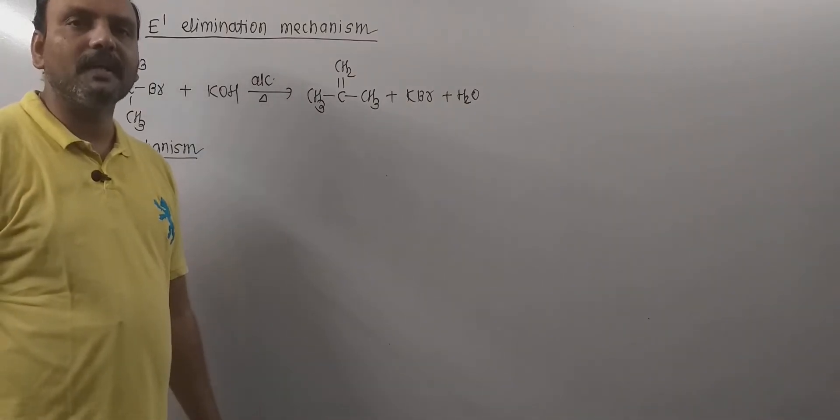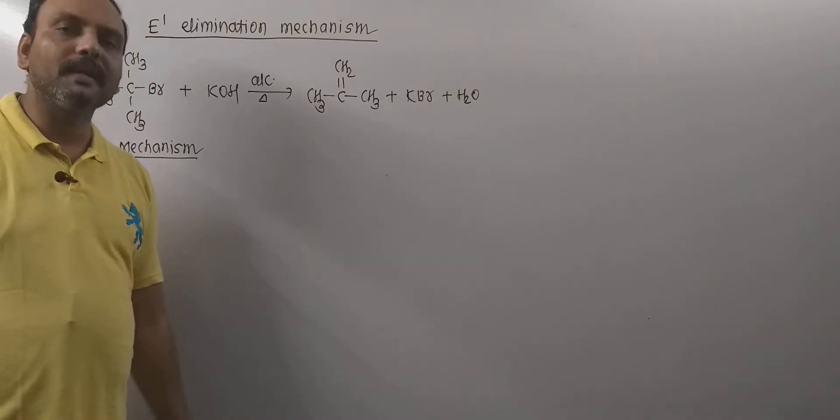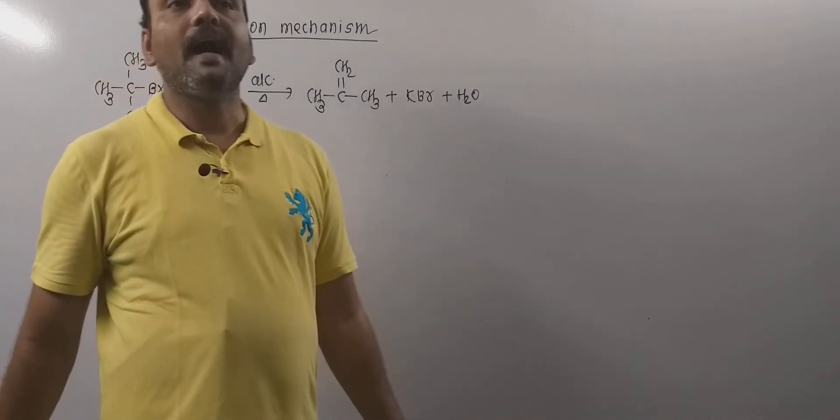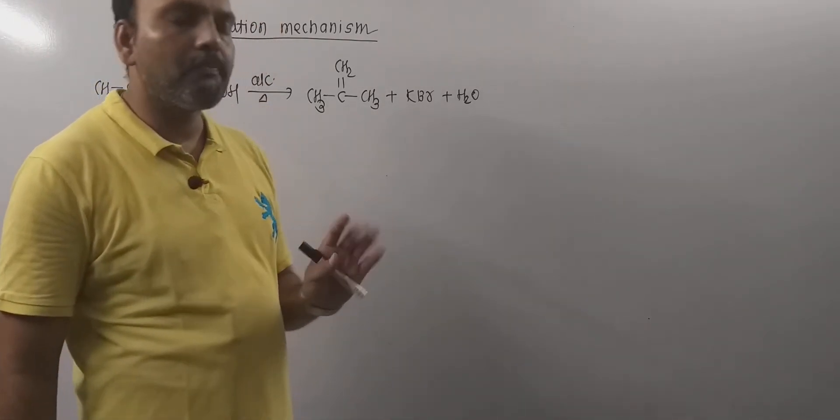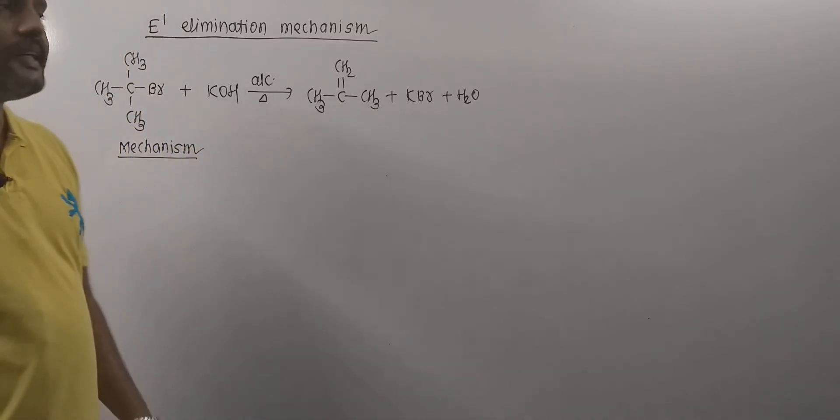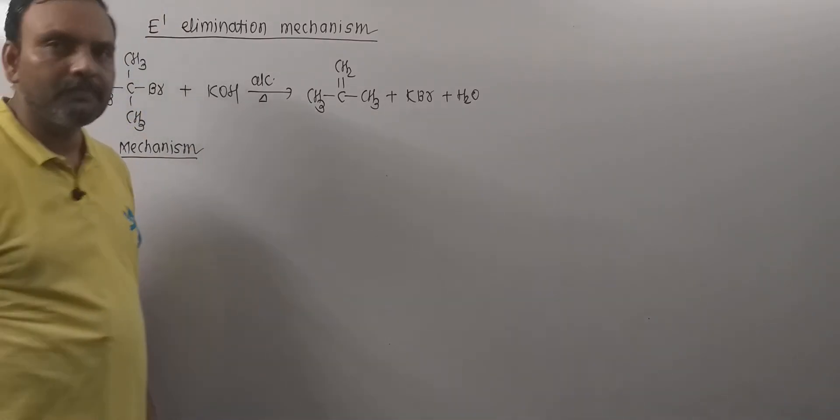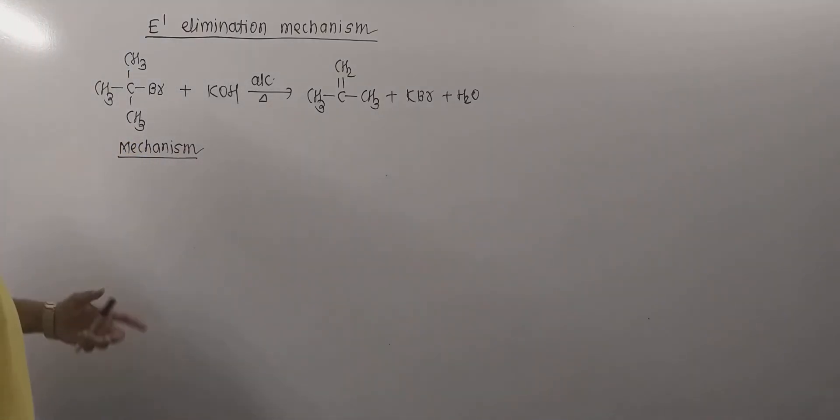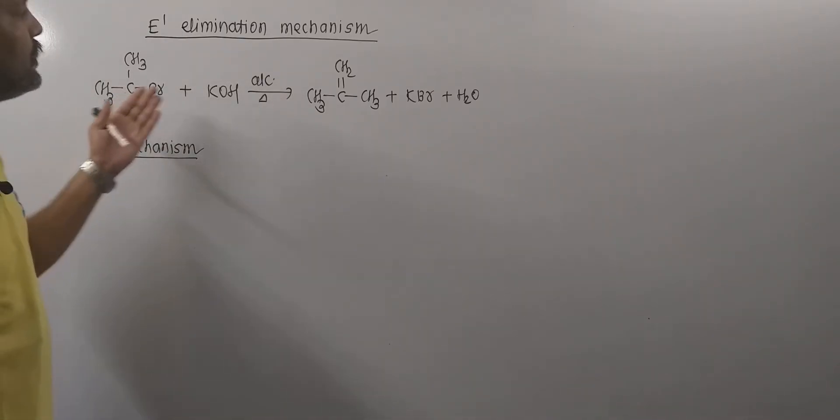Hello everyone, today we are going to discuss E1 elimination mechanism. E1 elimination is nothing but unimolecular elimination reaction. Normally, dehydrohalogenation of tertiary alkyl halides follow this path, so one of the finest examples of this is dehydrohalogenation of tert-butyl bromide.